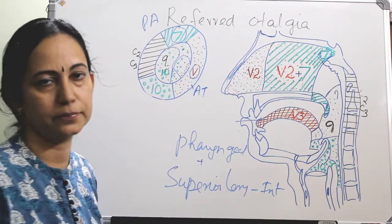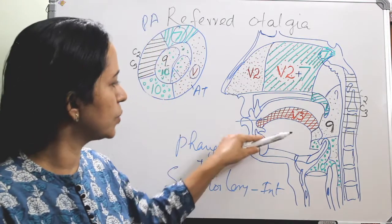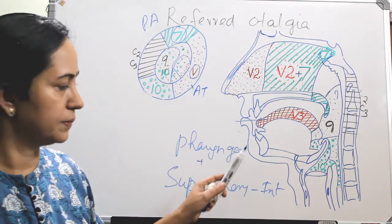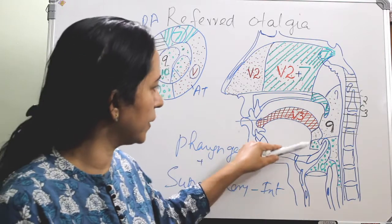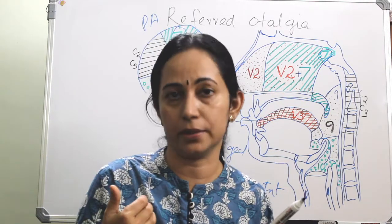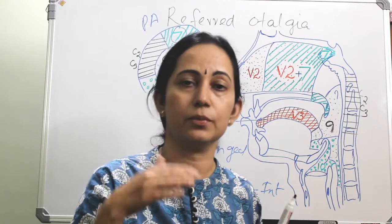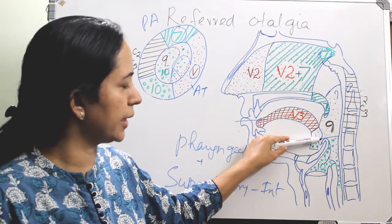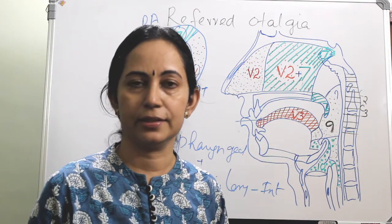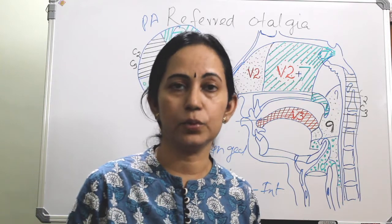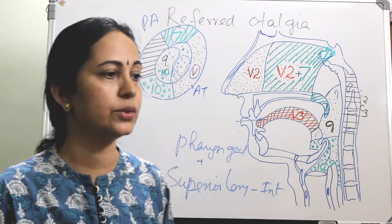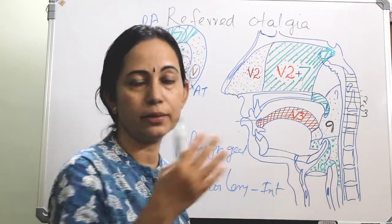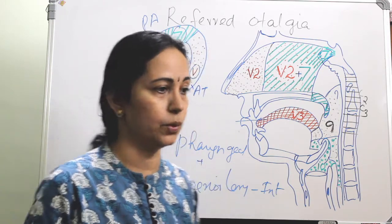The internal branch of the superior laryngeal nerve — which is the tenth nerve — supplies the supraglottic larynx, the vallecula, and both the lingual and laryngeal surfaces of the epiglottis, and also the lower pharynx. Any lesion in these areas can present as earache through referred otalgia via the vagus nerve.